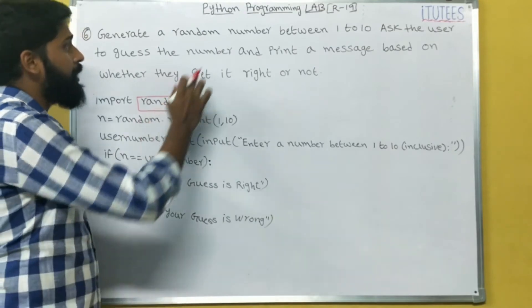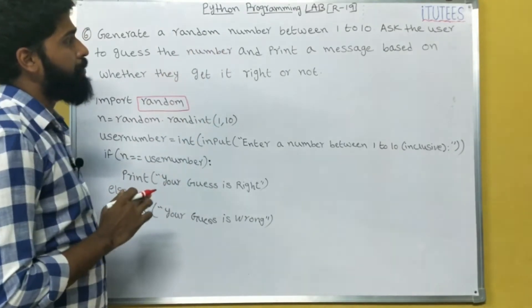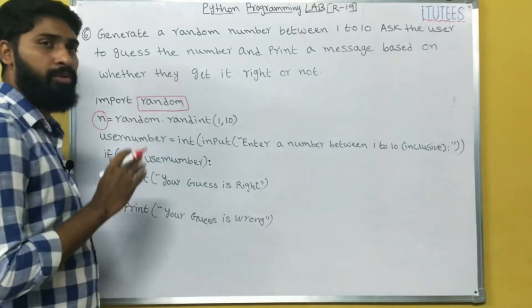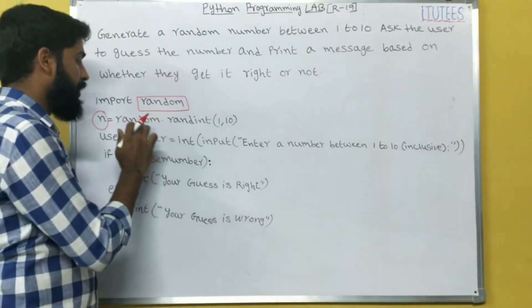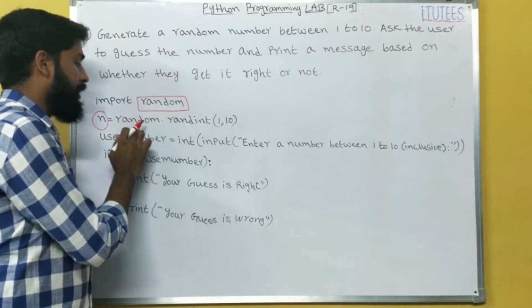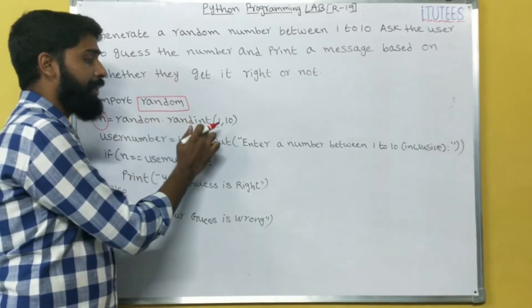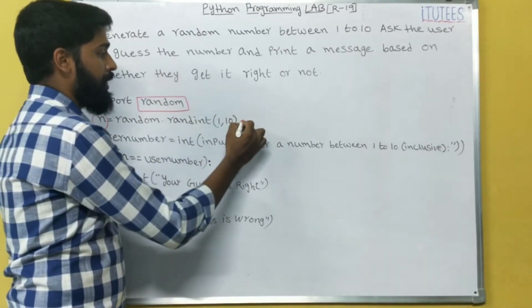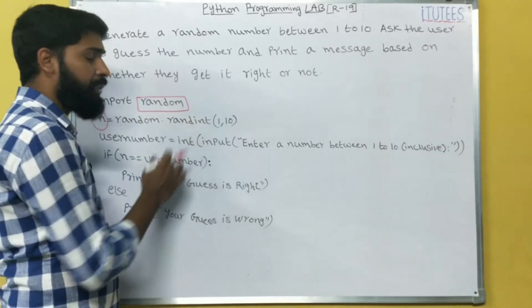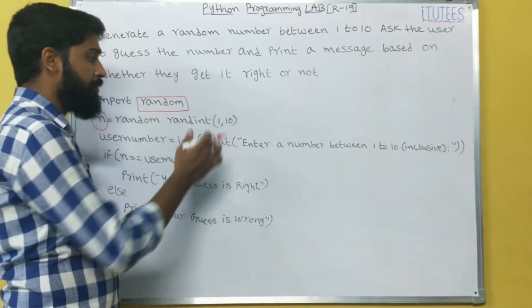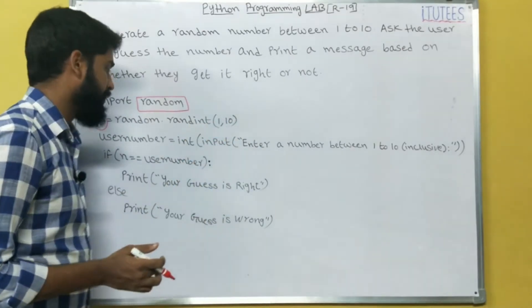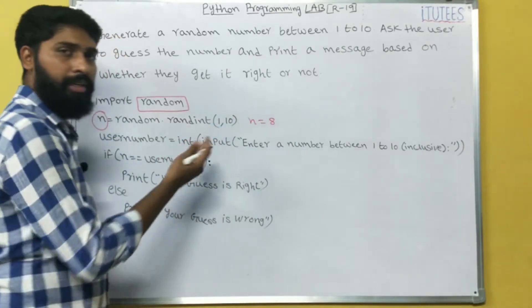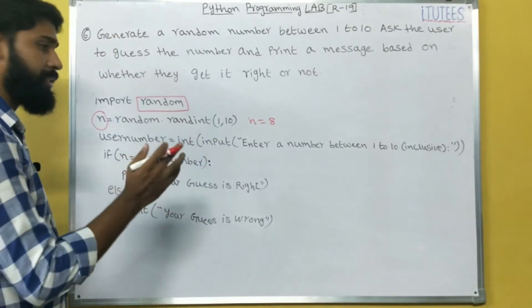For example, here the problem is random number between 1 to 10. For that I take one variable n to store the random value. How I can generate: random.randint. This is the method available in this module. I give the input as 1,10. That means it returns a random number from 1 to 10. For example, we assume that it returns 8. It returns randomly. We don't know what exactly.